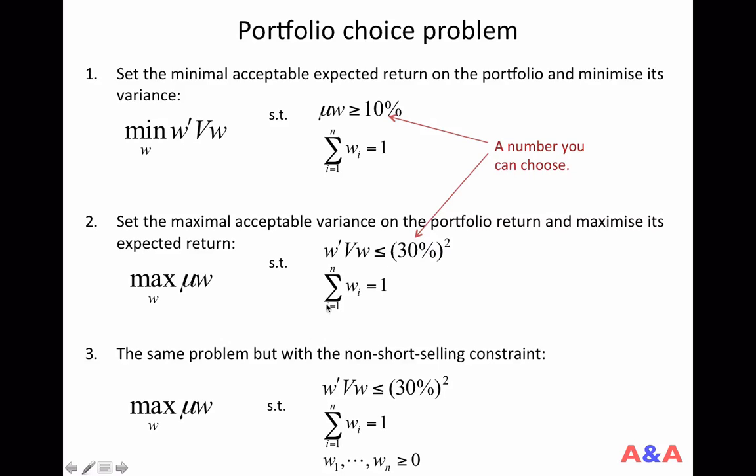The third problem looks pretty much like the second problem. You are choosing weights to maximize the expected return of the portfolio, setting the maximal acceptable variance of your portfolio. But it has one more constraint, which says all the weights should be non-negative.